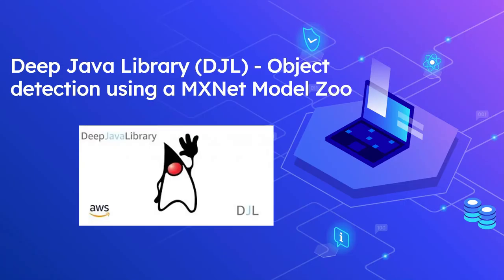Welcome to Tech Forum. In this video, let us see how to use the Deep Java Library, called DJL, to detect objects through the MXNet deep learning engine. DJL is a framework-agnostic deep learning toolkit for Java that supports multiple deep learning engines like TensorFlow, MXNet, PyTorch, etc. The engine can be changed whenever required based on your needs — refer to the video link in the description for more details on the basics.